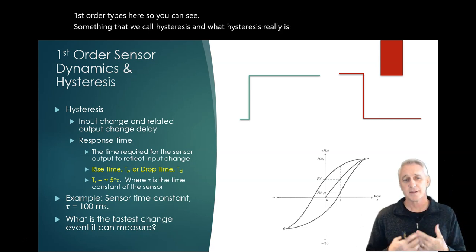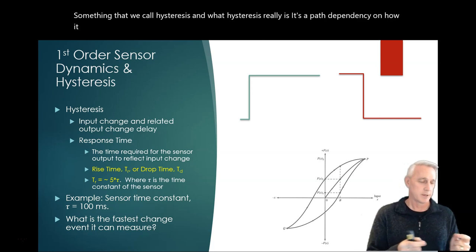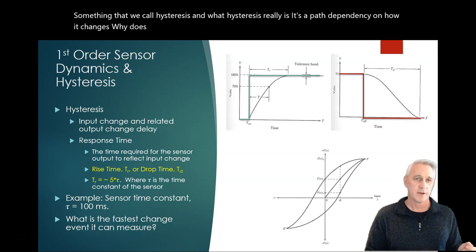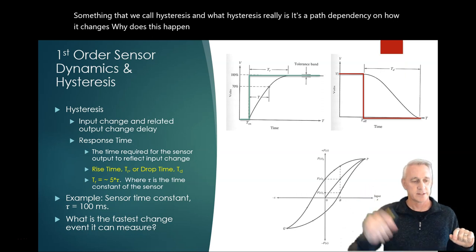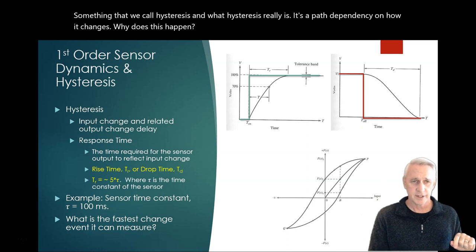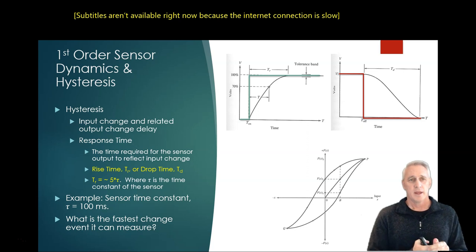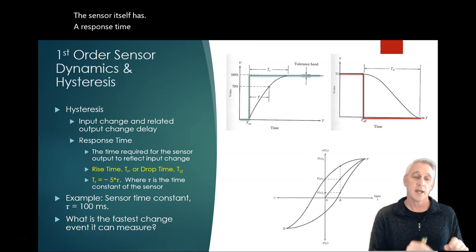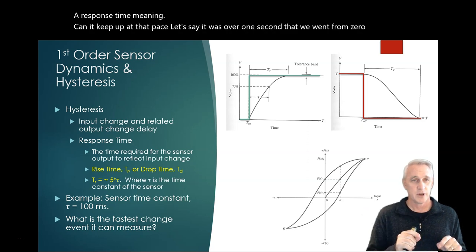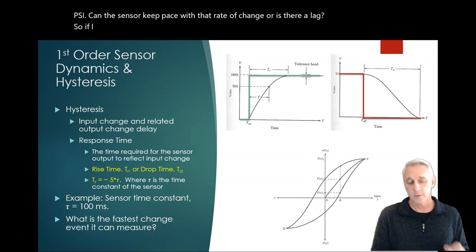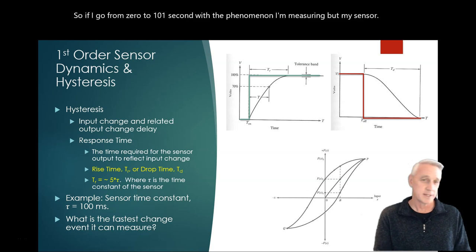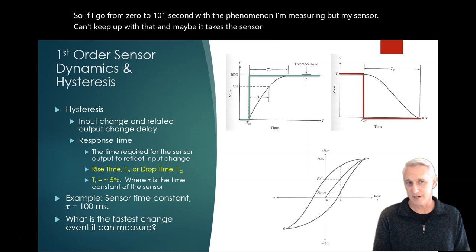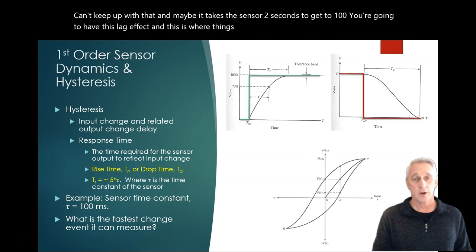You can see something that we call hysteresis. What hysteresis really is, is it's a path dependency on how it changes. Why does this happen? Let's say, for example, we have a sensor where we change the input at a certain pace or we go from zero to 100 psi really quickly. The sensor itself has a response time, meaning can it keep up at that pace? Let's say it was over one second that we went from zero to 100 psi. Can the sensor keep pace with that rate of change or is there a lag?